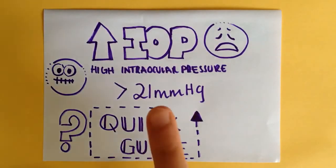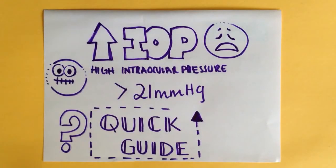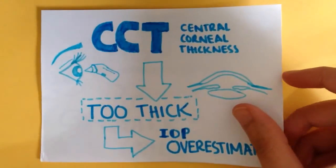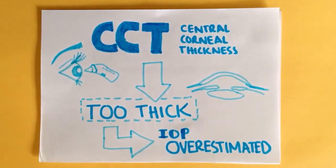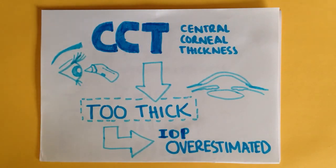To begin with, anything greater than 21 millimeters of mercury is considered to be high — all we need to do is find out why. The simplest check will be to measure central corneal thickness, CCT. If it's too thick, then the IOP may actually be overestimated and the patient's pressures may actually fall within a normal range. If all of the tests we discuss are unremarkable, then problem solved.